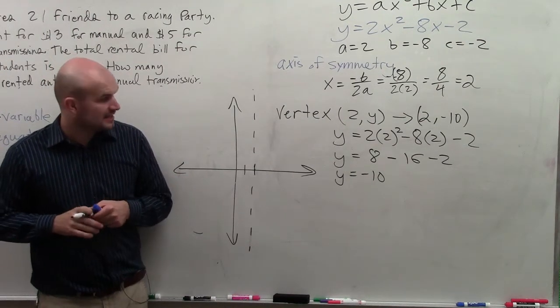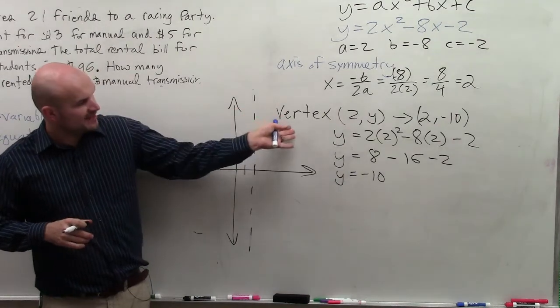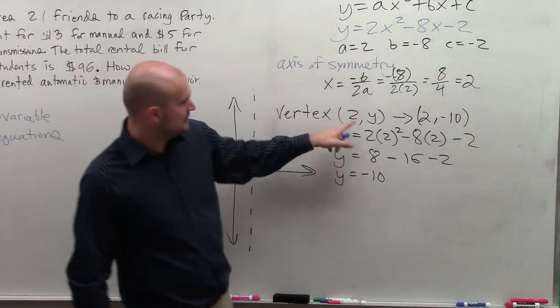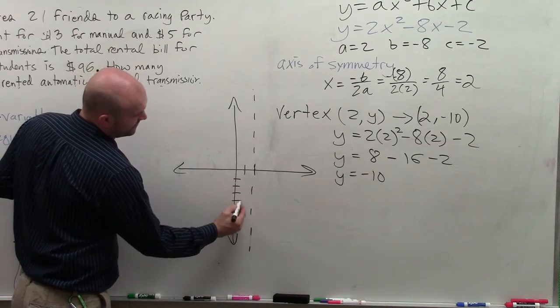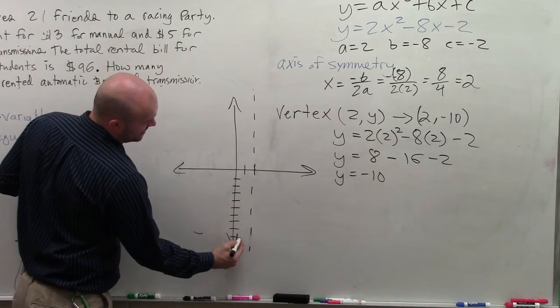The next thing is now identifying the vertex. Well, the vertex is at 2, negative 10. So I go over 2, down 10. 1, 2, 3, 4, 5, 6, 7, 8, 9, 10.